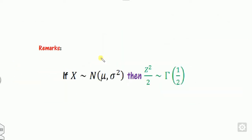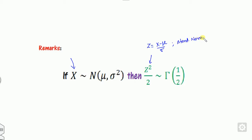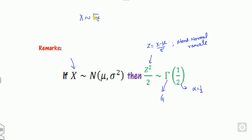Today's lecture is about the following: if X follows the normal distribution, then Z squared over 2 — where Z is the standard normal variate — follows the gamma distribution with parameter alpha equals one-half. We need to prove that Z squared over 2 follows the gamma distribution with parameter one-half, using the notation X ~ Gamma(alpha).